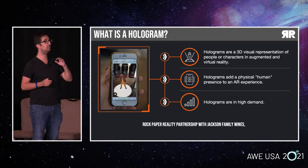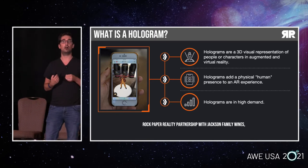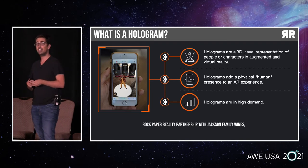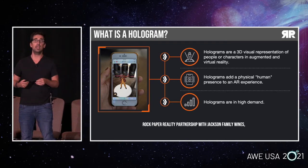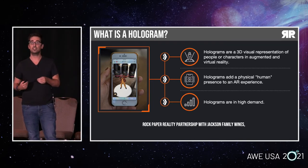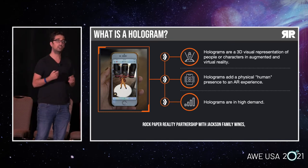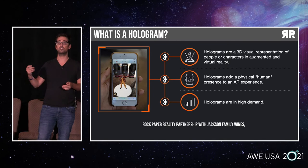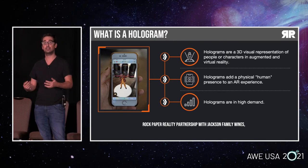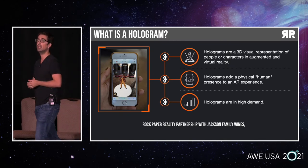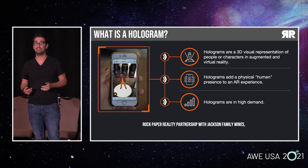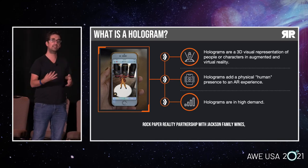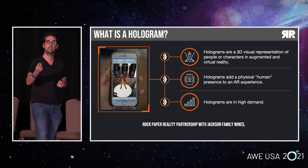Throughout this talk, I'll be talking about our partnership with Jackson Family Wines. They came to us last year with a problem. Their spokesperson Adam had started this company selling wine door-to-door, which is a really compelling story, but obviously that doesn't scale very well. They still wanted to imitate that story — they still wanted that human-human connection.